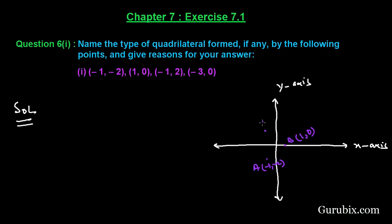Now we shall plot the point (-1, 2). Here is minus 1 and here is 2 — let this be point C, with coordinates (-1, 2). Now we shall plot point D at (-3, 0). Minus 1, minus 2, minus 3 — let this be point D with coordinates (-3, 0). Now we shall join all these points.